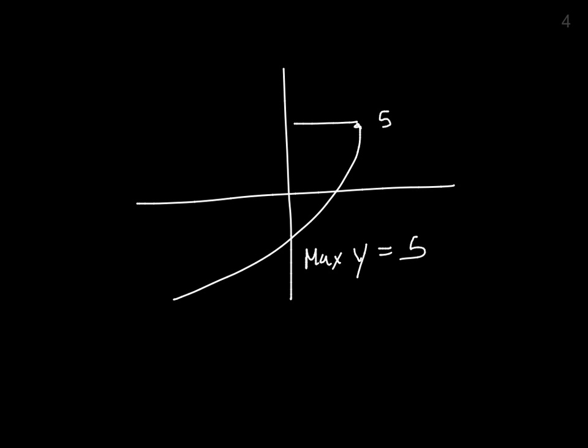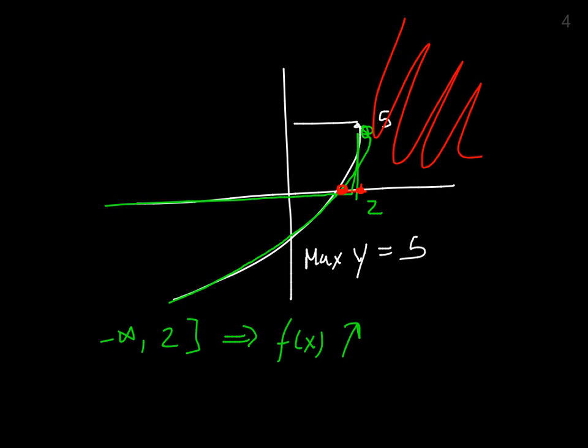It's increasing from negative infinity all the way up until 2, because the x coordinate was 2. So from negative infinity to 2, we have it increasing. This means that our function f(x) is increasing. And it's positive from our zero all the way to 2. Don't forget, it doesn't keep going past there, because there's no function on this side, according to our restrictions. And it's negative from negative infinity all the way up until our zero over here. All this is negative underneath the graph, underneath the x-axis.